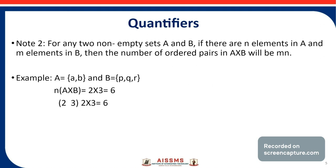Note: for any two non-empty sets A and B, if there are n elements in set A and m elements in set B, then the number of ordered pairs in A cross B will be m × n. Consider: set A contains two elements {a, b} and set B contains three elements {p, q, r}.